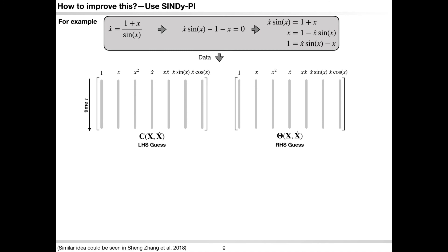By doing so, you could identify the dynamics x-dot times sin x equals 1 plus x without solving the null space of the library matrix. In other words, if we have prior knowledge that some nonlinear features definitely belong to an implicit equation, we could transfer the null space problem into a sparse regression problem, which is far more noise robust.